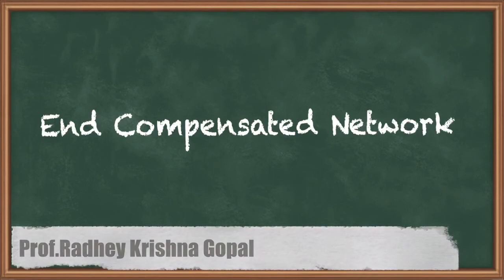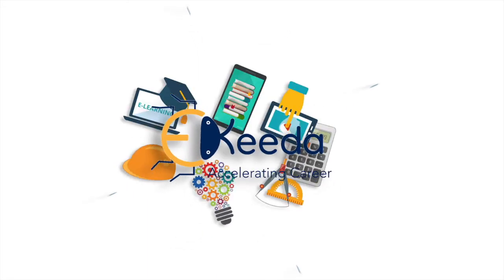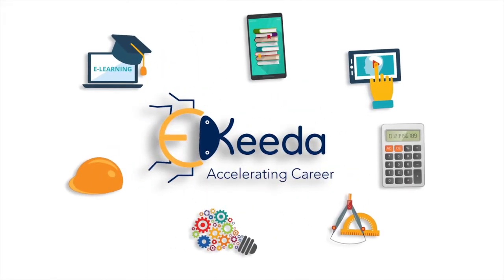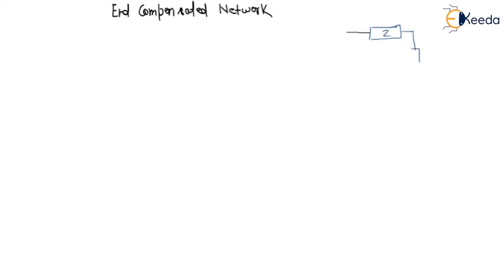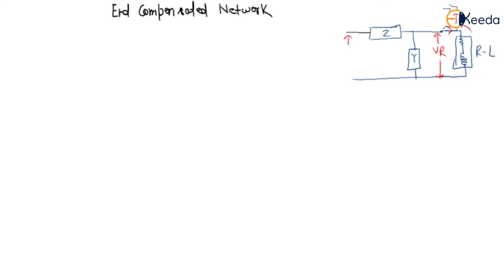Now we are going to study the end-compensated network. In the end-compensated network, all the capacitors have been transferred to the receiving end. So this will be Z, this will be Z, and this will be Y, and this will be Y. An RL load is connected, with receiving end voltage VR, receiving end current IR, sending end voltage VS, and sending end current IS.